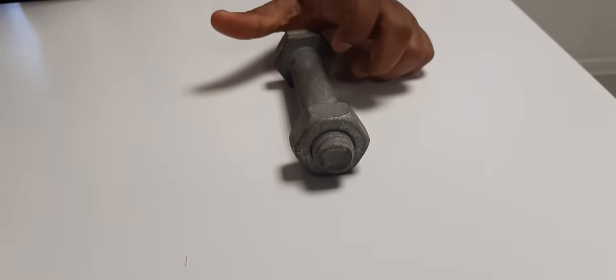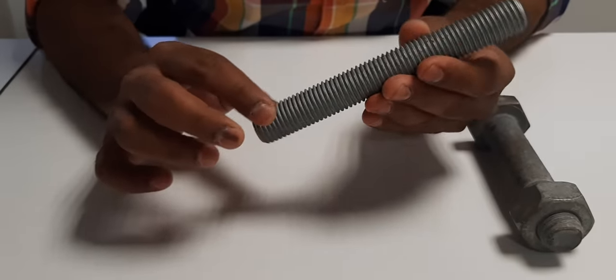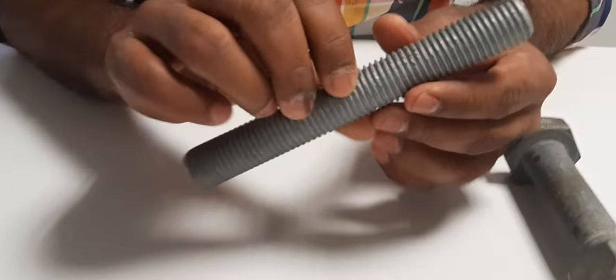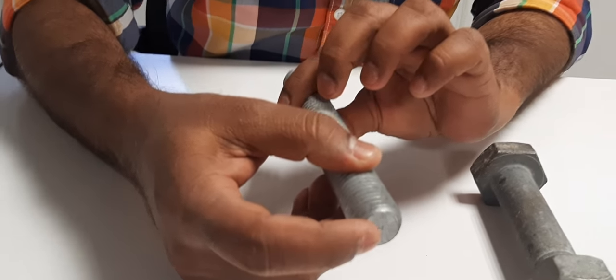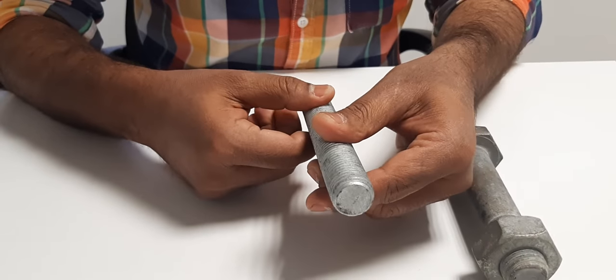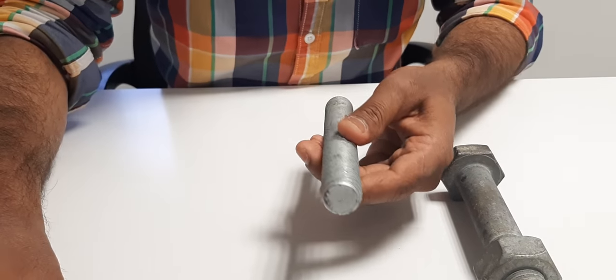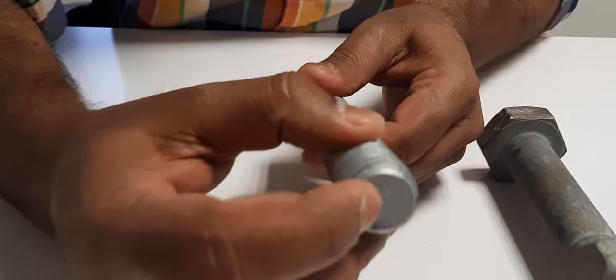Next we go to stud. Stud is nothing but a fully threaded iron rod. The full portion is threaded. Both ends have taper, bottom side and top side. Also you can find here the identification mark.